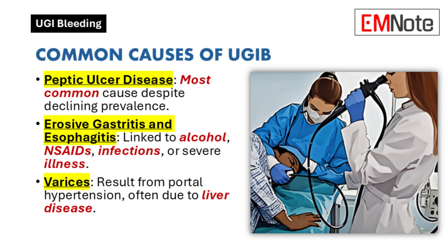Peptic ulcer disease remains the leading cause of upper gastrointestinal bleeding, despite its declining prevalence over the past two decades. This decline is attributed to better recognition and management of Helicobacter pylori infections, as well as awareness of risk factors like aspirin, non-steroidal anti-inflammatory drugs, and smoking.